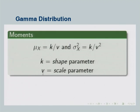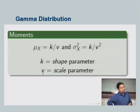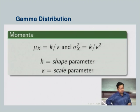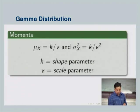The mean of the gamma distribution is K/V and the variance is K/V². K is called the shape parameter and V is called the scale parameter. These descriptors change how the PDF and CDF look — similar to how lambda is the single parameter for the Poisson distribution, for gamma we have K and V as shape and scale parameters.